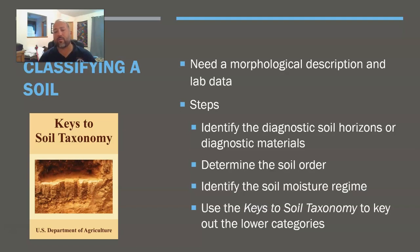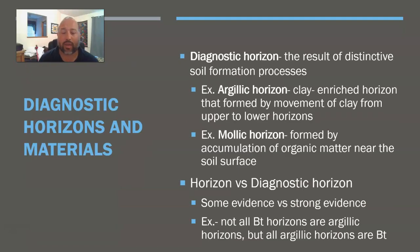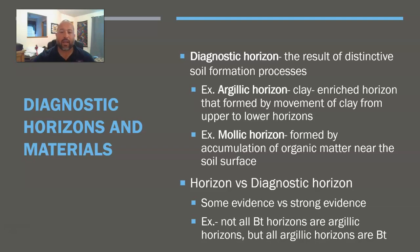And then we have all this nice information that tells us about what we want to know about that soil. The next question is: what is a diagnostic horizon and how do we figure that out? A diagnostic horizon is the result of a distinctive soil formation process. It means that it's very obvious and very distinctive compared to other ones. The book gives two examples: an argillic horizon, which is a clay-enriched horizon formed by the movement of clay from upper to lower horizons, and a mollic horizon, which is formed by an accumulation of organic matter near the soil surface.